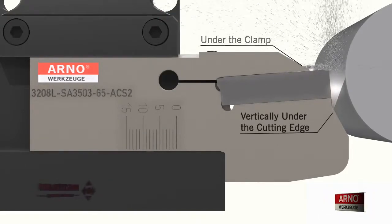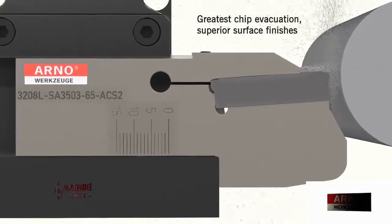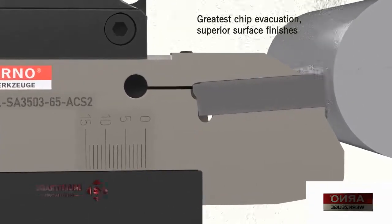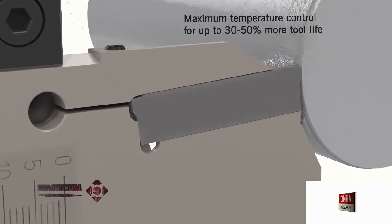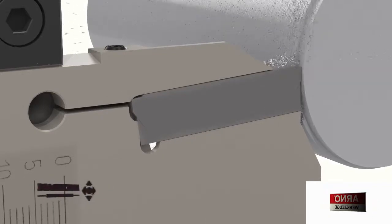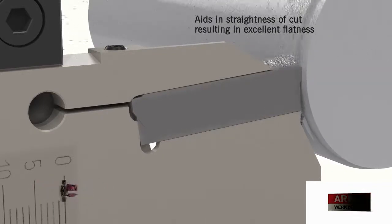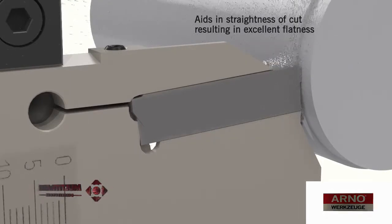The ACS-2 system has several key advantages. It further enhances chip evacuation, which significantly improves surface finish. The total immersion of the cutting edge provides maximum heat control that boosts insert life by 30-50%. All of this combined yields excellent accuracy, superior finishes, maximum tool life, and greater overall process stability.